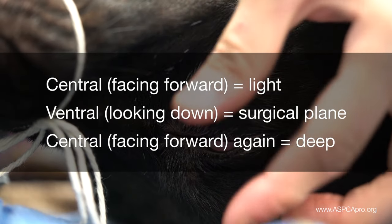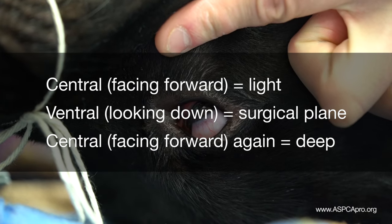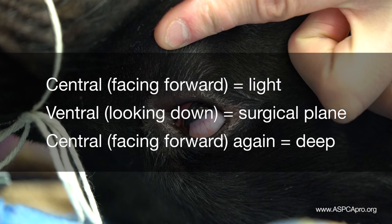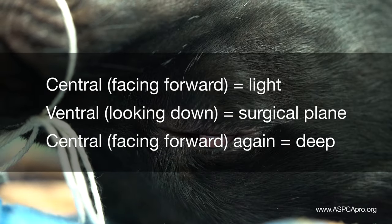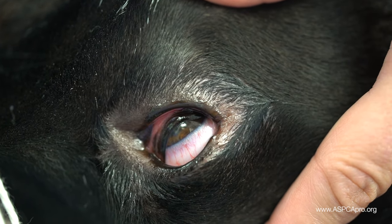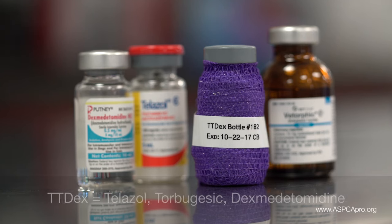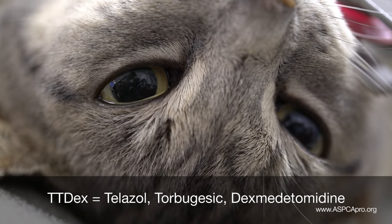The iris will be central when the patient is light under anesthesia, ventral when the patient is at a surgical plane of anesthesia, and central again when the patient is deeper than a surgical plane of anesthesia. It is therefore important to check other parameters when the patient has a central eye position. Note that the use of a tt-dex combination drug protocol in cats will often result in a central eye position regardless of anesthetic depth.